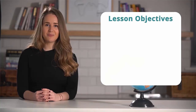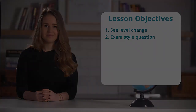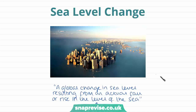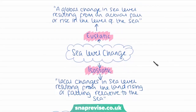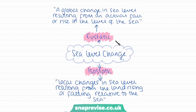In this video we're going to be learning about sea level change, finishing with an exam style question. Firstly I'm going to give a brief overview of sea level change. This photoshopped photo shows New York City on a coastline, giving quite an exaggerated picture of what New York could look like in the future if sea level rise takes place. We have two different types of sea level change to learn about: eustatic sea level change and isostatic sea level change, and it's important to be able to distinguish between the two.